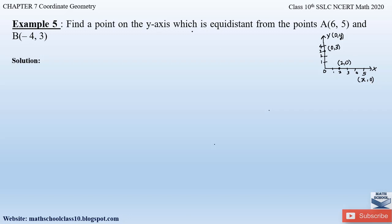So here again, let us make a figure to find a point that is on the y-axis. Let us consider a point C which is on the y-axis with coordinates (0, y). This point is equidistant from point A whose coordinates are (6, 5) and point B whose coordinates are (-4, 3). Point C is at equal distance from point A and point B. We have to find the value of y by applying the distance formula — finding the distance AC and BC first, then equating them.